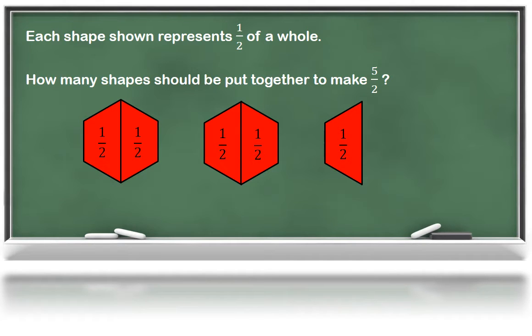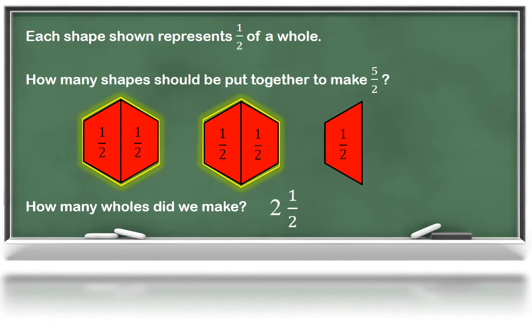I wonder how many wholes we can make with five halves. I see one whole here, and here is another. But then I don't have enough for a third whole. So I was able to make two wholes and one half. We can write this as a mixed number.